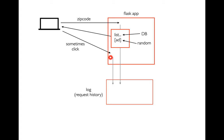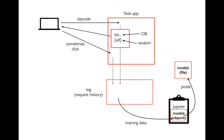Sometimes the user will click the ad, and sometimes they will not. In both cases, whenever somebody requests to see a page we want to record that to a file, and whenever somebody clicks something we want to record that to a file as well. That file is called a log — it's basically all the request history. After we've been running our application for a while, we're going to get some training data from that, and in a separate Jupyter notebook we'll process it.